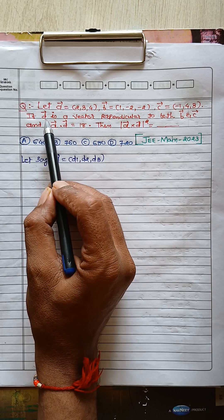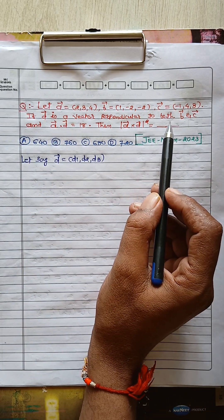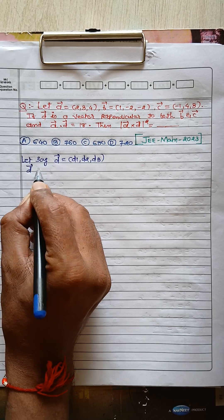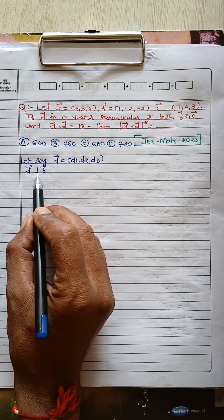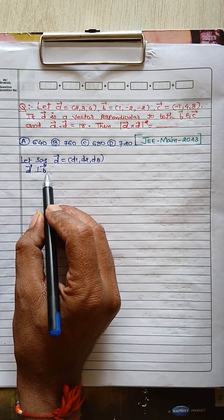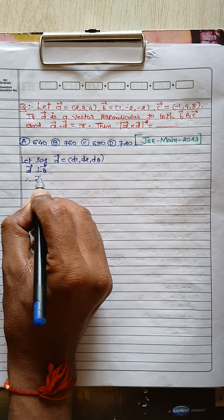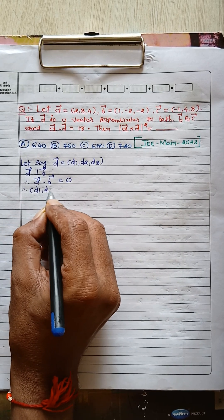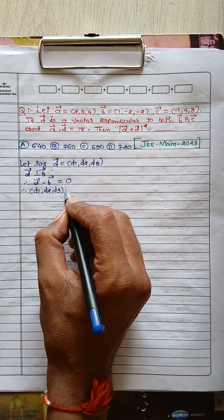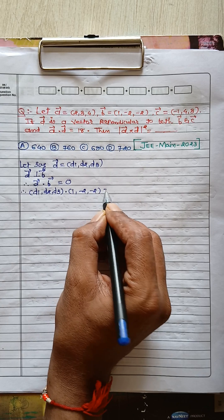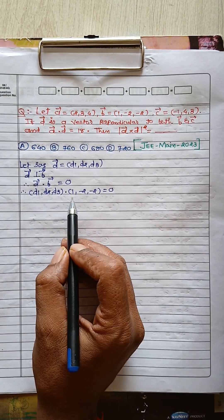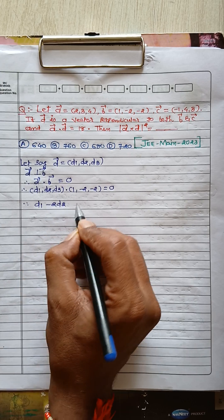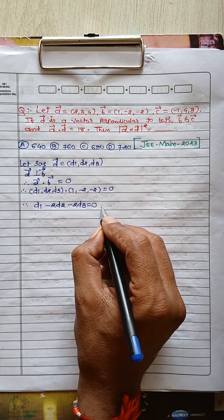The first condition is that vector d is perpendicular to vector b. We know that if two vectors are perpendicular to each other, their dot product equals zero. So we write vector d dot vector b equals zero. Vector d is (d1, d2, d3) and vector b is given as (1, -2, -2). By taking the dot product, we get d1 minus 2d2 minus 2d3 equals zero. This is Equation 1.